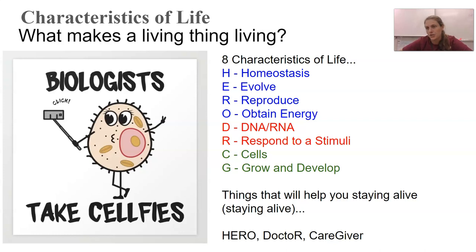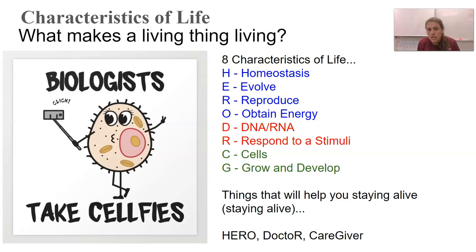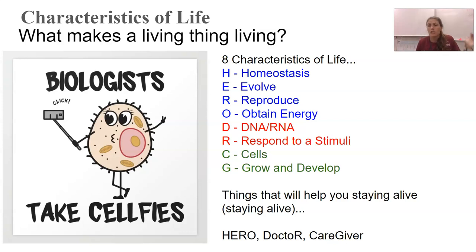We have the ability to obtain energy. That brings back those macromolecules and how important they are — why we eat them. We are obtaining the energy we need to actually live and function. All living things, to be a living thing, you've got DNA and you've got RNA — at minimum one of those two things. That nucleic acid carries our hereditary information, helps us with evolving, and tells us how to obtain energy.